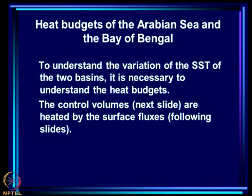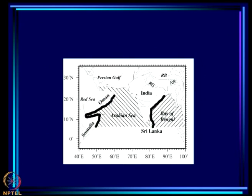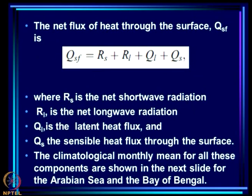To understand the variation of the SST of the two basins, it is necessary to understand the heat budgets, because what leads to the change in SST is determined by the heat budget. Control volumes are heated by the surface fluxes — when one talks of the Arabian Sea, one is talking of the volume of water averaged over that region, and similarly for the Bay of Bengal. The total surface flux includes net shortwave radiation Rs, net longwave radiation Rl, latent heat flux, and sensible heat flux. The climatological monthly mean for all these components are shown for both basins.